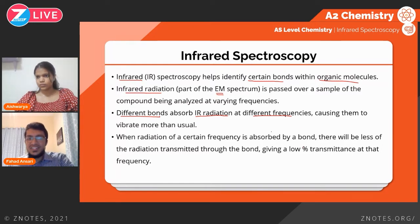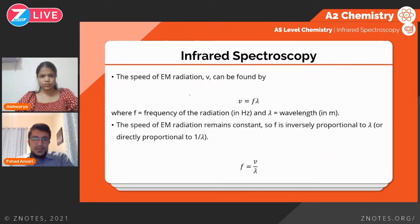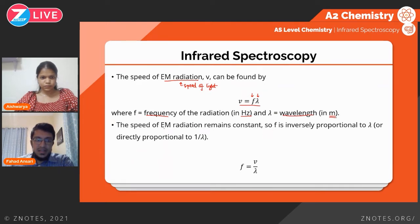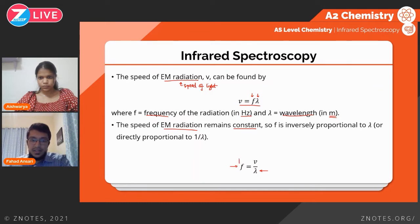When a bond absorbs IR radiation at a certain frequency, there will be less infrared rays transmitted through to the detector, giving us a low percentage transmittance, and that is what is plotted on a graph. The speed of electromagnetic radiation is the speed of light, given by frequency times wavelength. Since this speed remains constant, frequency is inversely proportional to wavelength — increase the frequency and the wavelength decreases.